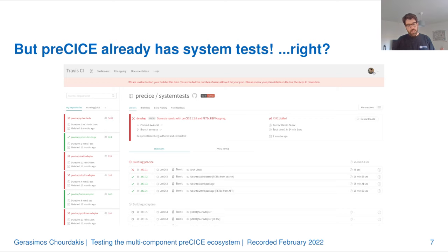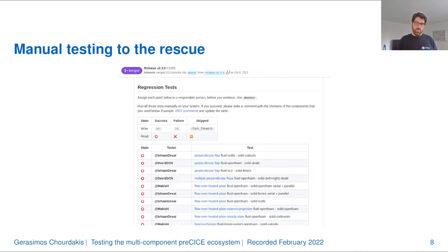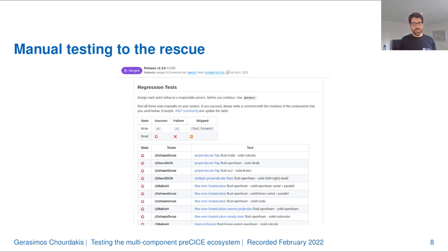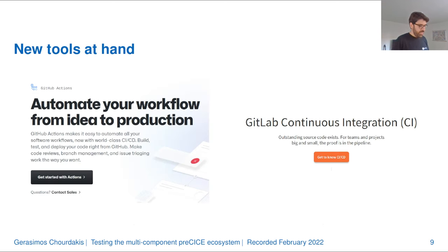If you go to the Travis CI page today, you will see a lot of red — because we don't use or maintain this system anymore. What we do actually test right now is that we run the tutorials on our systems manually with every release and try to look at the results as closely as the release cycle allows. That's also why it is very important that we get feedback from you whenever you see anything strange. In the meantime, we are building a new system test infrastructure based on new tools.